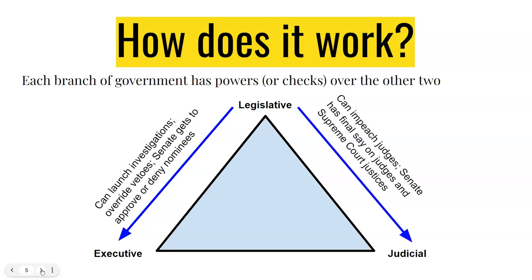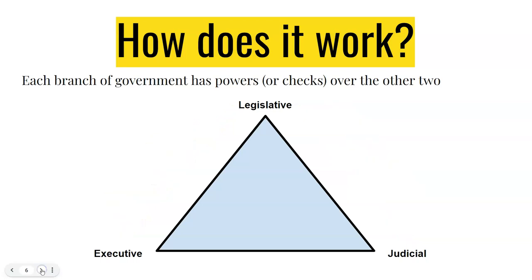Congress also can impeach judges. Federal judges serve for life, but Congress does have the ability to remove them if there are enough votes to do so. And the Senate has the final say on those judges and Supreme Court justices, so they get to have a say in who makes up the judicial branch.